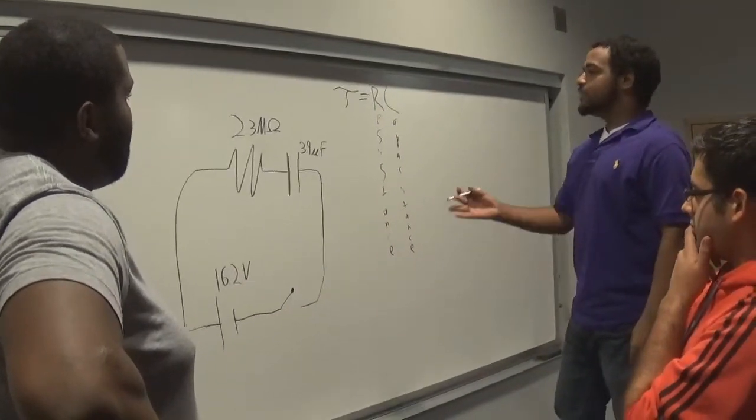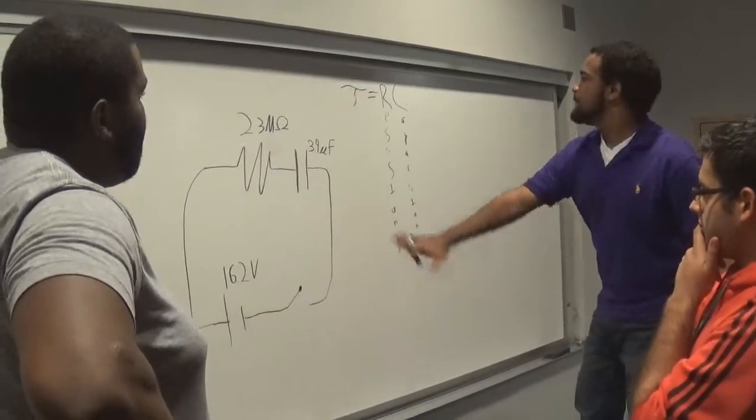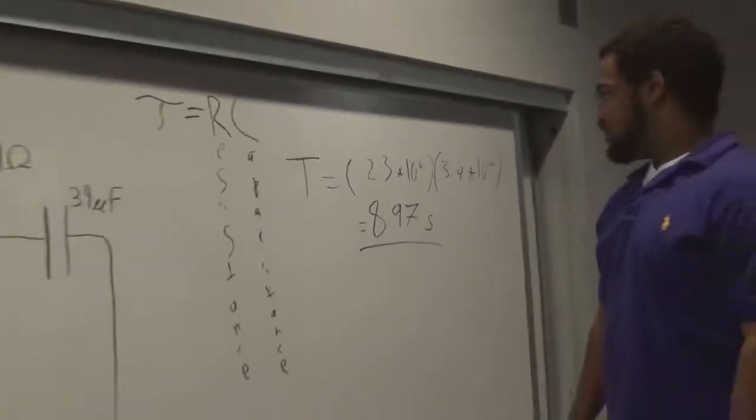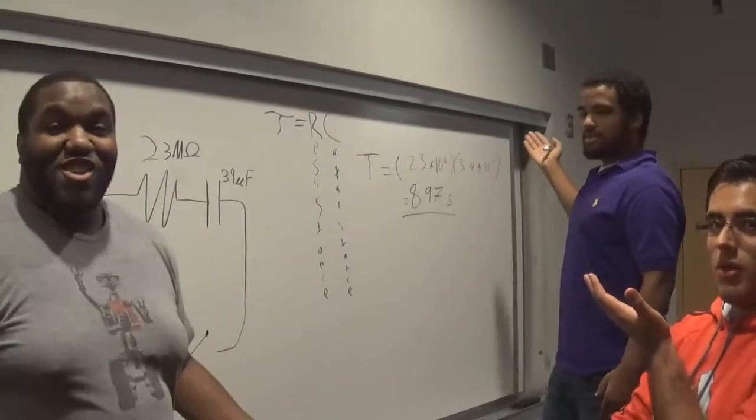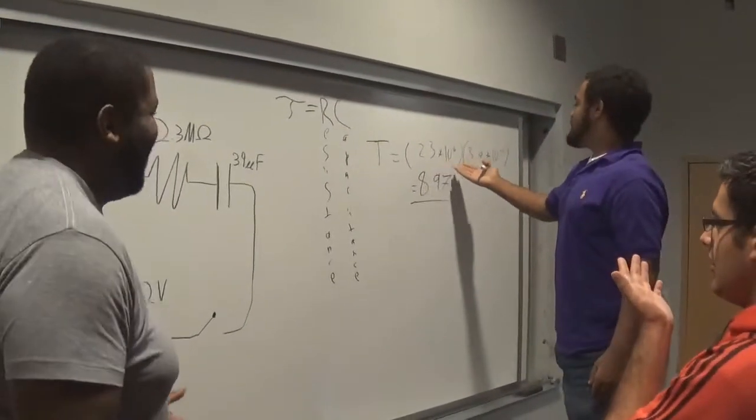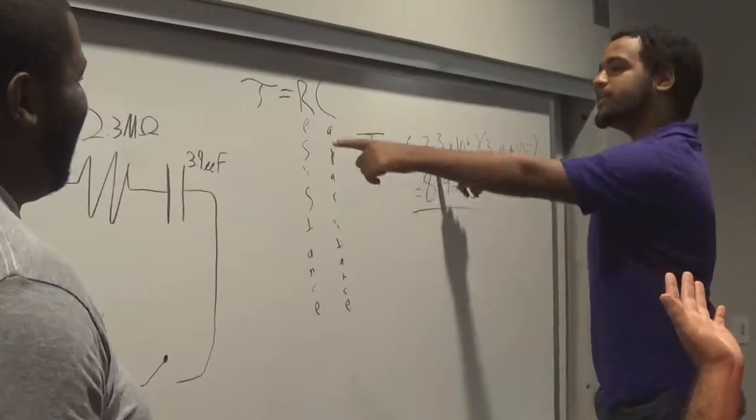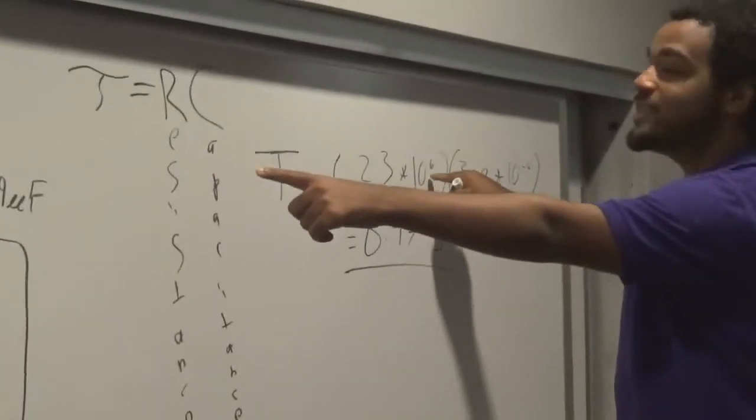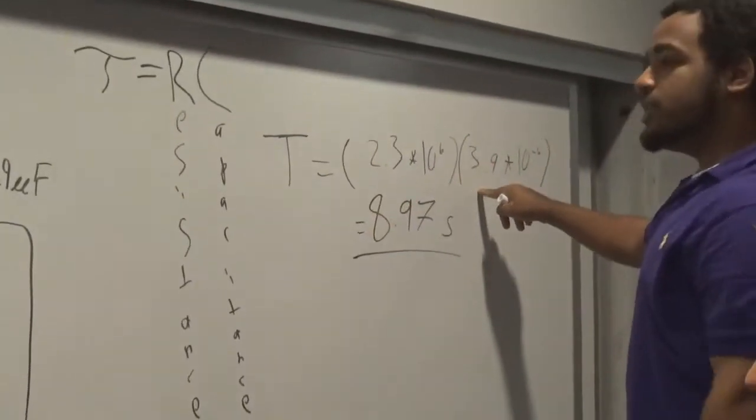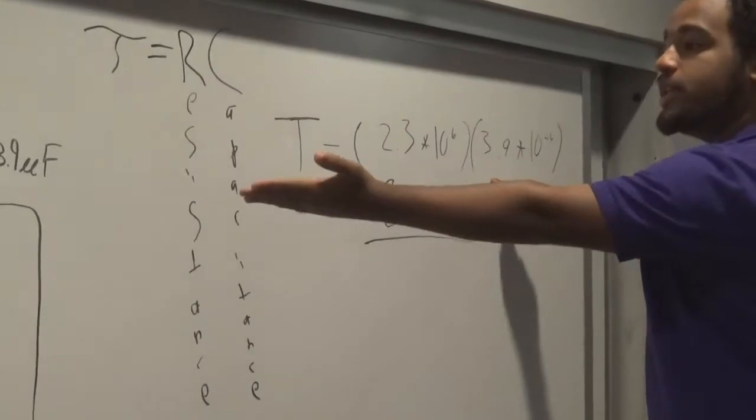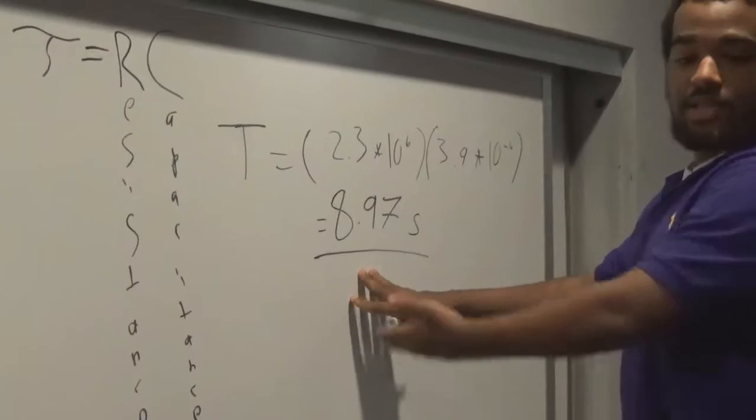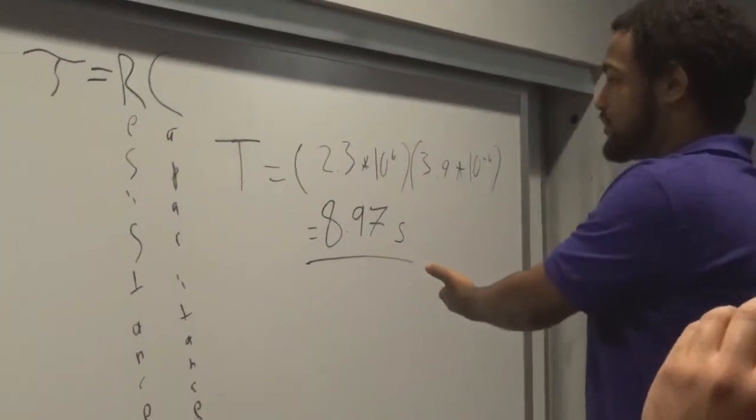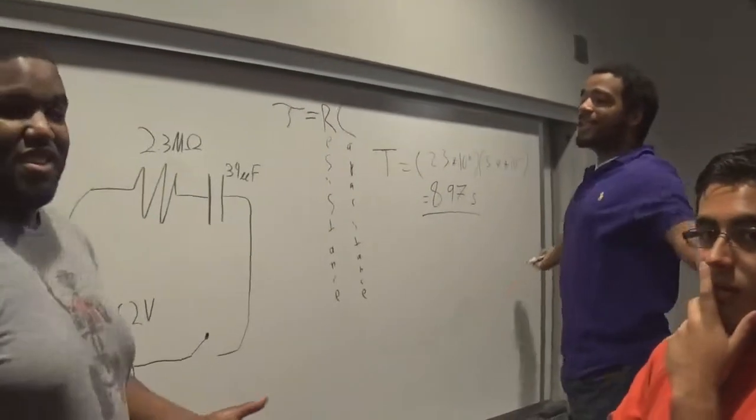Get ready for your mind to be blown. Whoa. Whoa. I took the resistance, which was the 2.3 times 10 to the 6 power, and then I took the capacitance, which was 3.9 to the negative 6, and then that's going to give me my answer. That's so easy. Time constants.